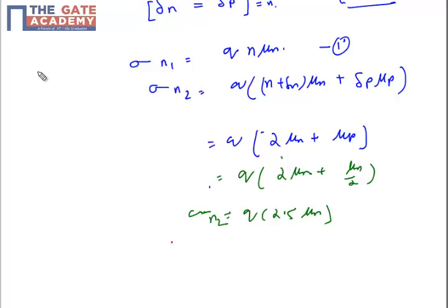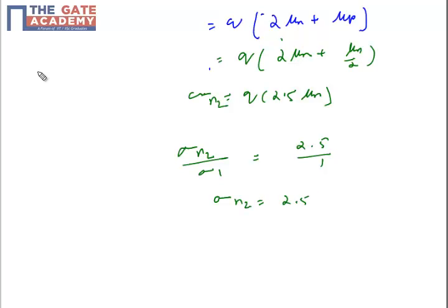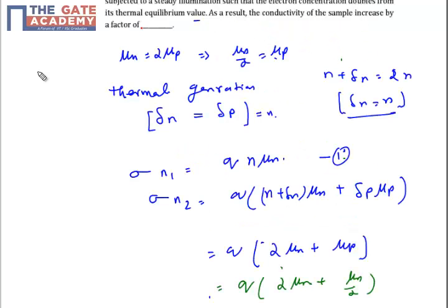So just get the ratio of σ2 by σ1. And you will have it as 2.5 upon 1. That is σ2 is 2.5 times σ1. It means that conductivity has been increased by 2.5. So conductivity is increased by the factor of 2.5.